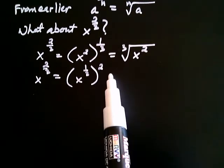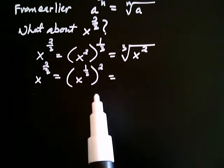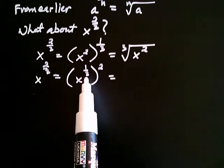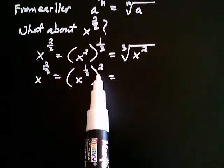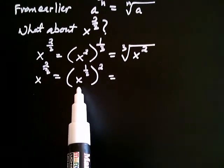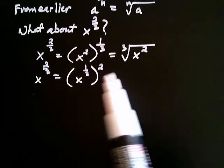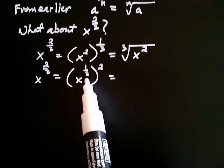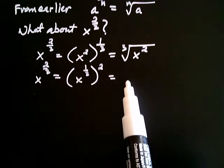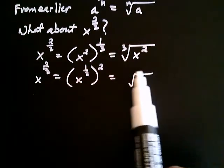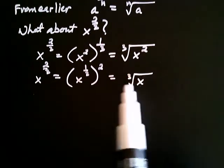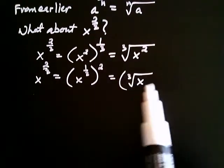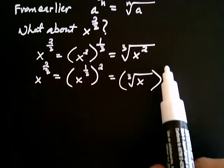That gives us a slightly different interpretation. What this is saying now is: take x and raise it to the 1 third, and then square that. What is x to the 1 third? From our definition above, x to the 1 third — that 3 becomes an index. So x to the 1 third is the same thing as the cube root of x, and then take that whole thing and square it.